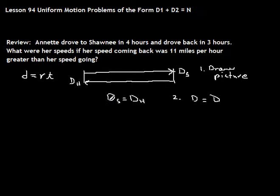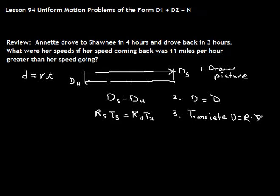The third thing is to translate your distance into rate times time. The distance to Shawnee equals rate to Shawnee times time to Shawnee; distance home equals rate home times time home. So you write it out as rate times time equals rate times time. Now we have four variables, so we need four equations to solve this — as many equations as you have variables.